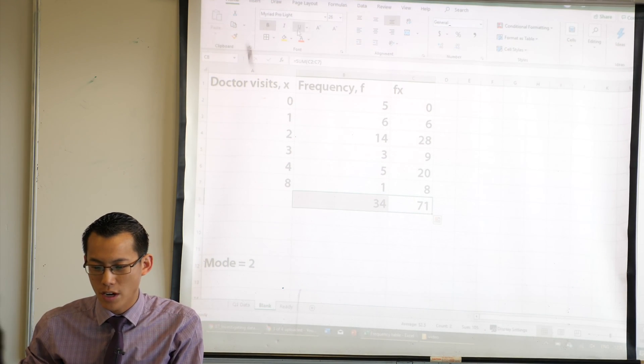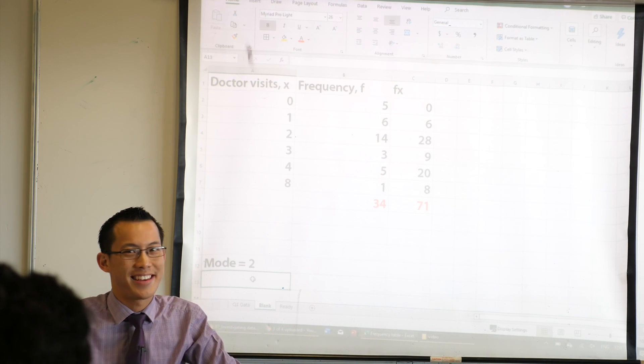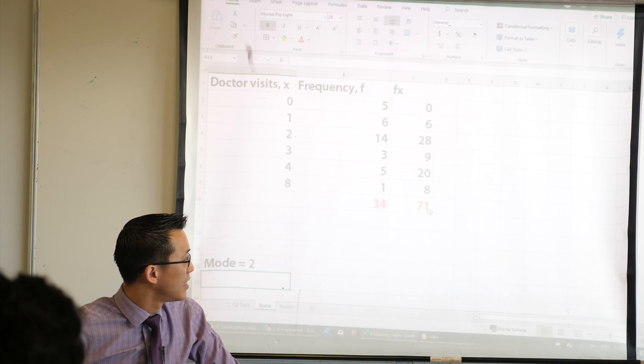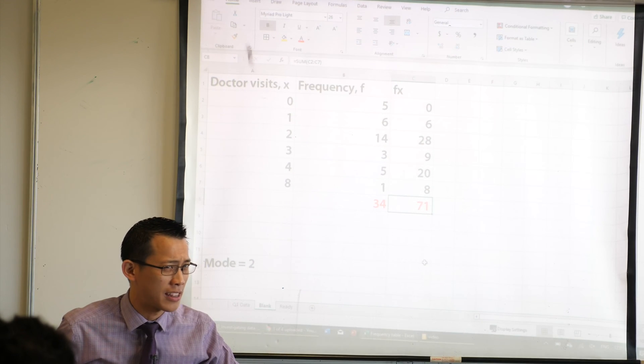So, let's have a look at these. I'm going to highlight these two numbers in red. Maybe you want to do the same. How do I use these two numbers to calculate the mean? What do I do? This is the total. What happens when you add up every single one of your numbers?